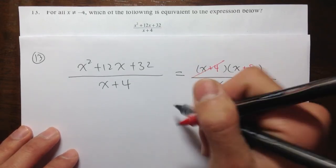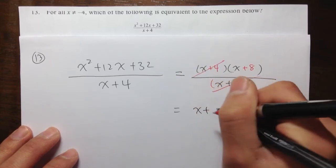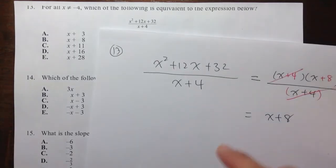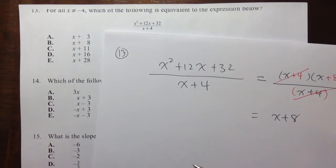So that we will get x plus 8. That's the simplest that we can get, x plus 8, which is answer choice B.